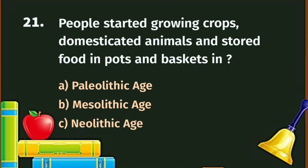Question number 21. People started growing crops, domesticating animals and storing food in pots and baskets in which era? A. Paleolithic Age, B. Mesolithic Age, C. Neolithic Age. The correct answer is C - Neolithic Age.